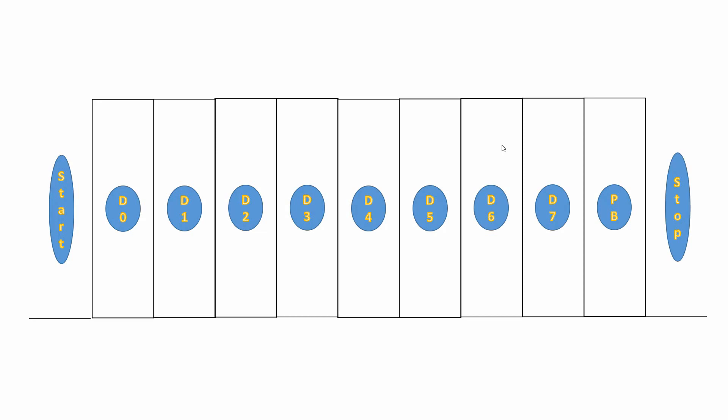Parity bit is optional — it can be even parity or odd parity. The baud rate needs to be the same between both MCUs so that they can synchronize with each other. This is how the UART protocol is defined with start bit, stop bit, parity, and baud rate, which enables the UART transfer.